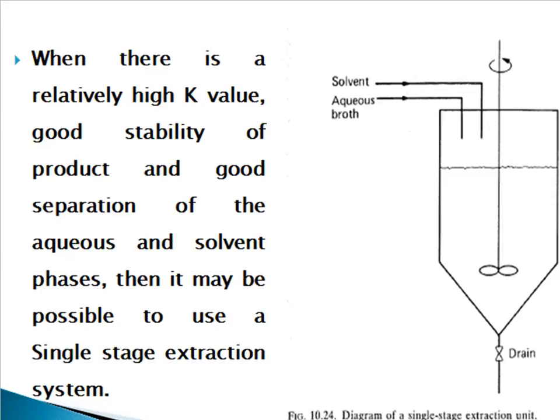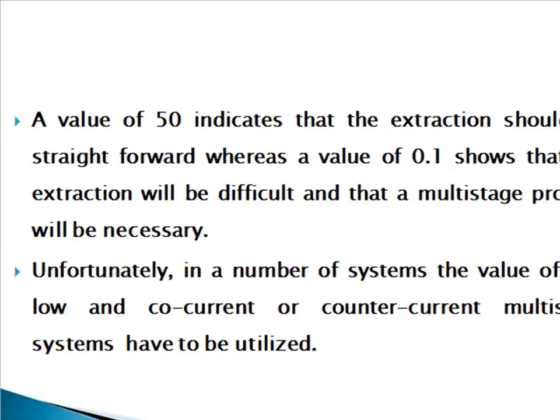When there is a relatively high K value, good stability of product, and good separation of the aqueous and solvent phases, it may be possible to use a single-stage extraction system. A K value of 50 indicates that extraction should be straightforward, whereas a value of 0.1 shows that extraction will be difficult and a multi-stage process will be necessary. In many systems the value of K is low, and co-current or counter-current multi-stage systems have to be utilized.